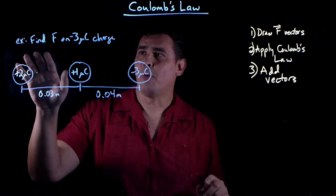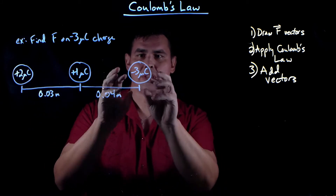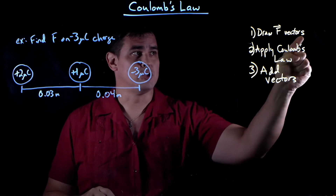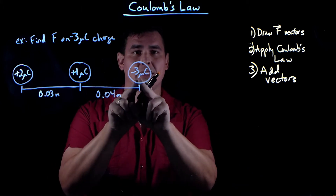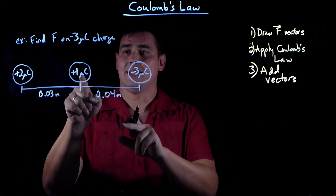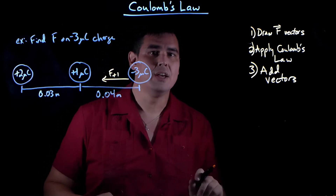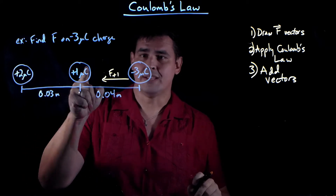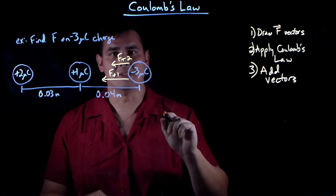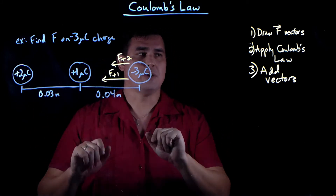Let's solve an example problem. I want to find the force on a minus three micro-Coulomb charge, given two other charges and their distances. There are three steps. First, draw your force vectors. The plus-one charge will attract the minus three, so I draw a force vector toward it. The other charge is also positive, so it also attracts — I draw that one a little smaller because it's further away, and distance is squared in the equation, so it has a bigger effect.